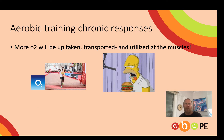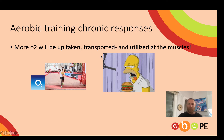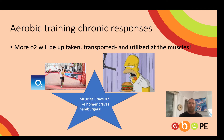These aerobic training chronic responses — whether muscular, respiratory, or cardiovascular — are basically about getting more O2 to the muscles. Today we're talking about the transport of O2 to the muscles, which is done by the cardiovascular system.